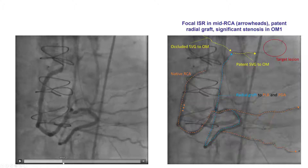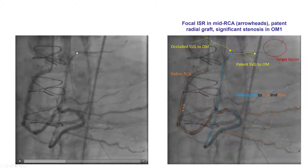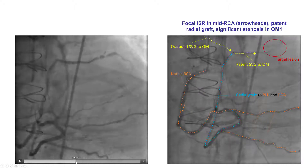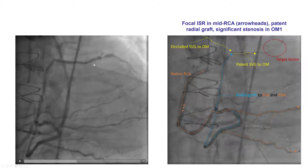There is continued filling through that radial jump graft. Even though the saphenous vein graft to the obtuse marginal is occluded in the proximal portion, the portion of the graft distal to the Y is actually patent. It is filling retrograde from this radial jump graft into the first obtuse marginal branch, which had a significant lesion right at the distal anastomosis — a very long distance from the ostium of the right coronary artery providing flow to this vessel.